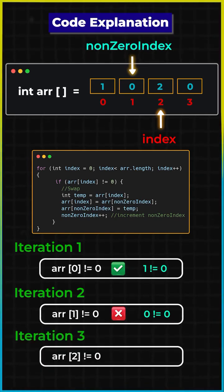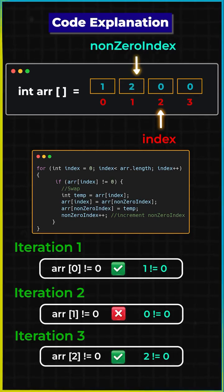Now for the third iteration, arr[2] != 0, which is true, so we will again do the swap and increment the non-zero index.